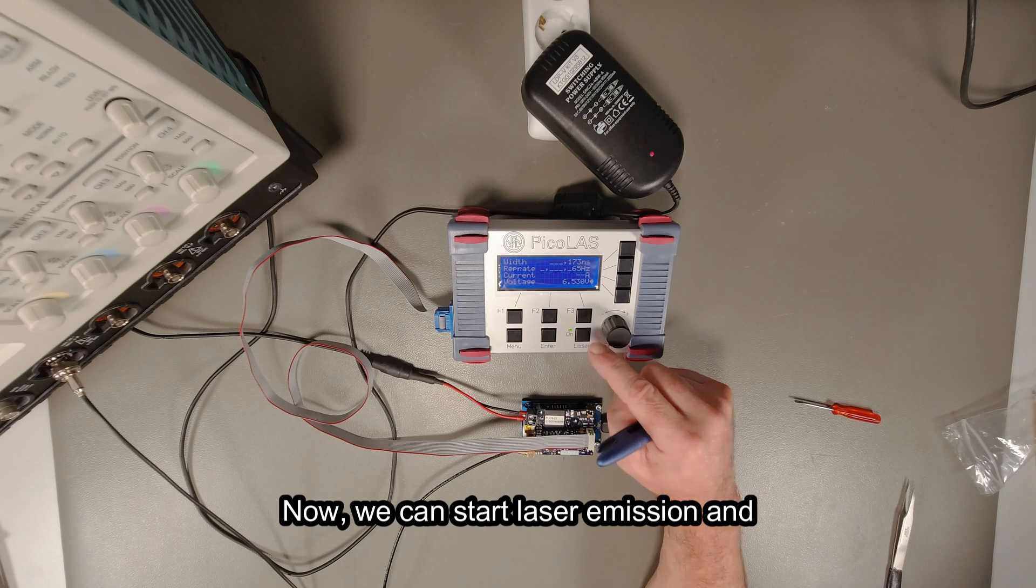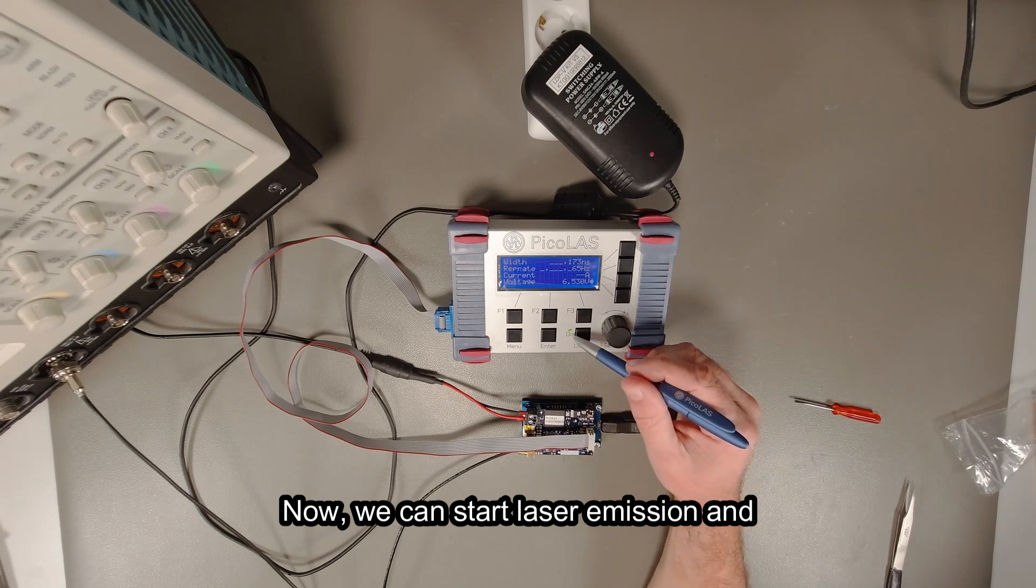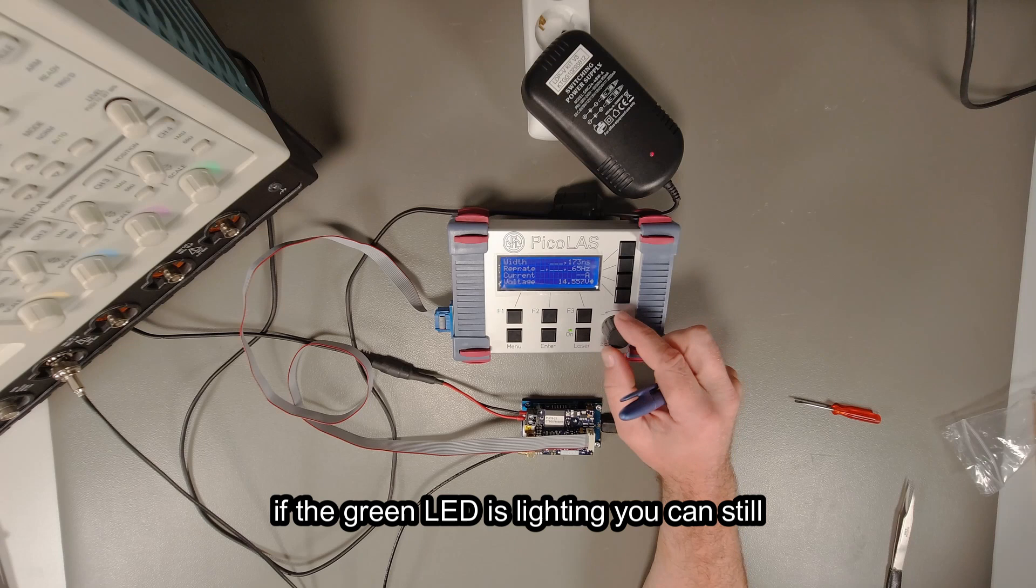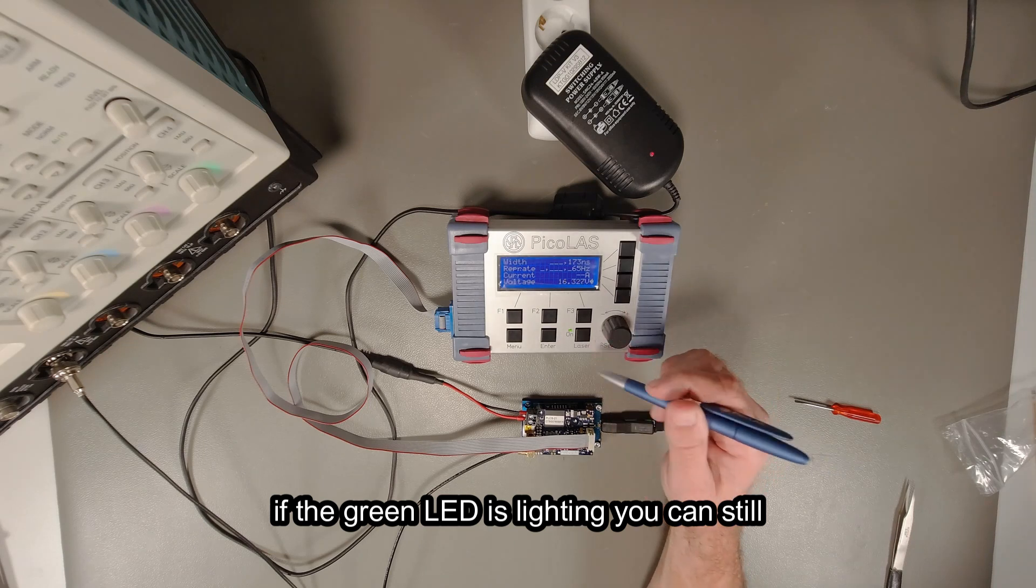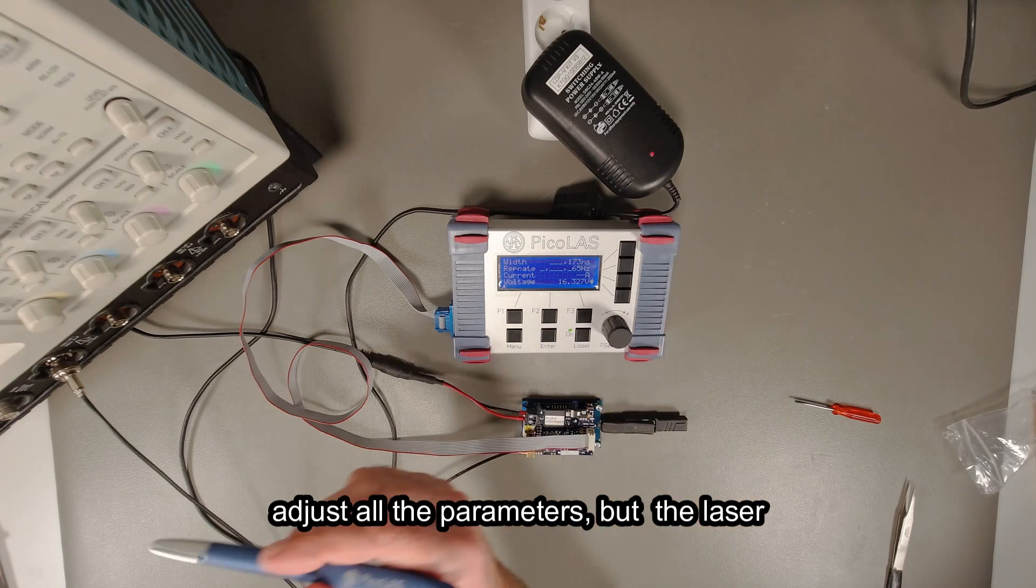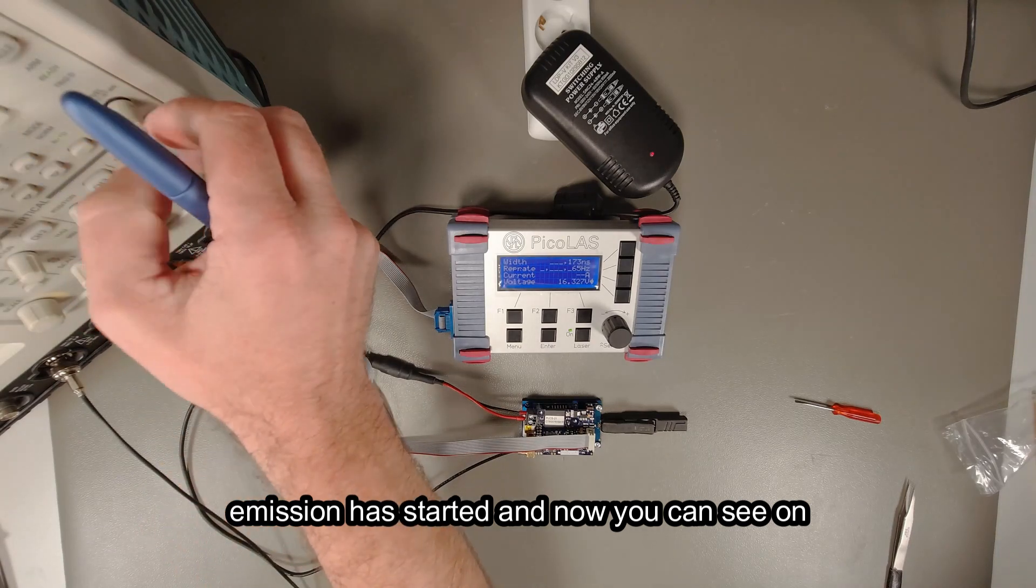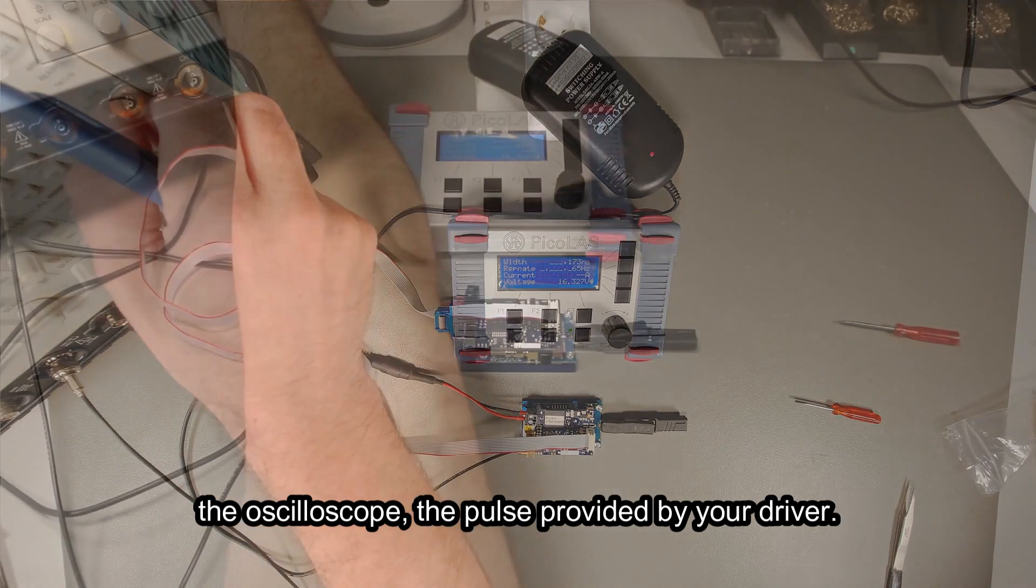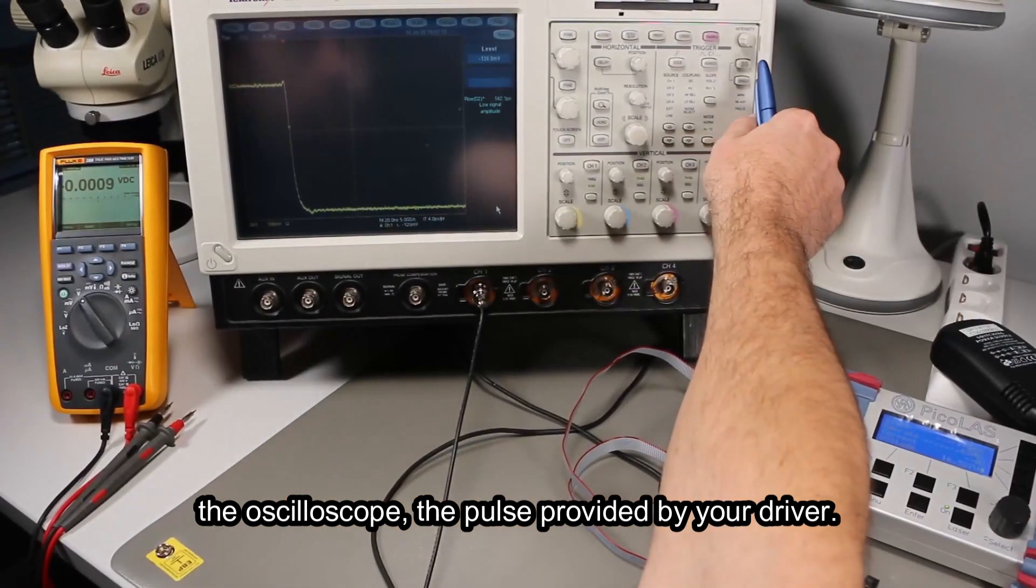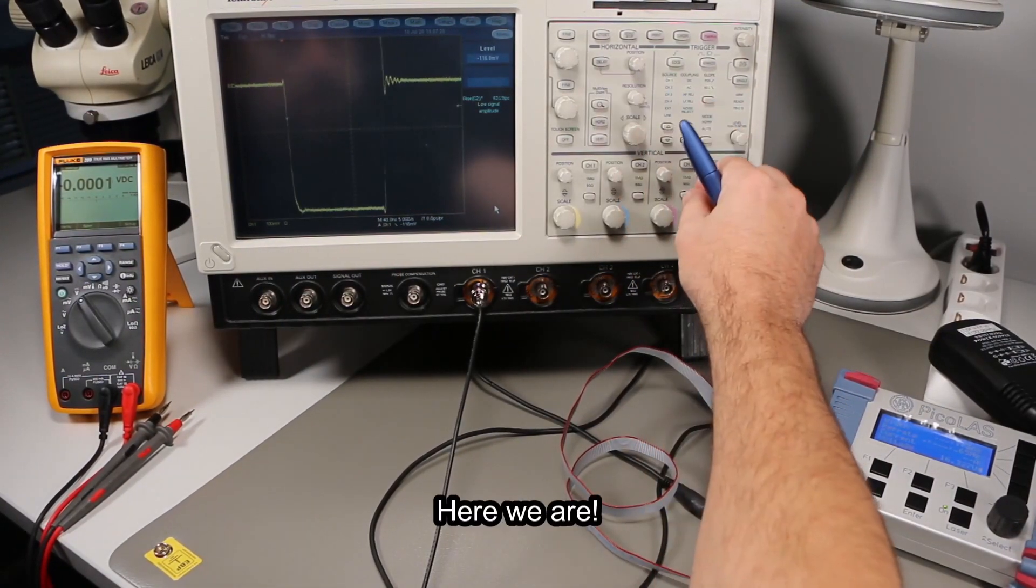Now we can start laser emission. When the green LED is lighting, you can still adjust all the parameters, but the laser emission is started. Now you can see on the oscilloscope the pulse provided by your driver. Here we are.